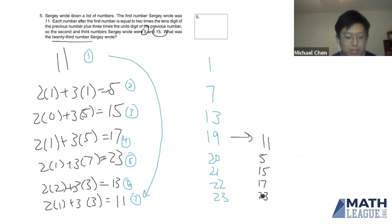So that means that the 23rd number that Sergey wrote is actually 23. And that's your answer for target 5.